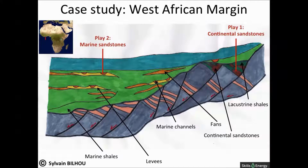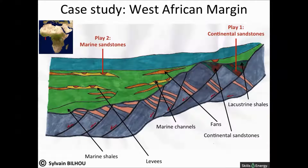To illustrate the passive margins petroleum play, I will show as an example the petroleum system of the West African margin. Two petroleum plays can be seen in this area. The first one involves the sediments deposited in the rift period. Reservoirs are characterized by lacustrine, fluvial, or alluvial fan sandstones. Lacustrine shales both constitute good source rocks and seal. The traps may be stratigraphic, with the sands disappearing laterally, or structural, induced by normal faults.